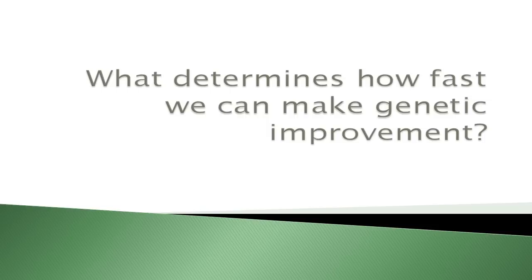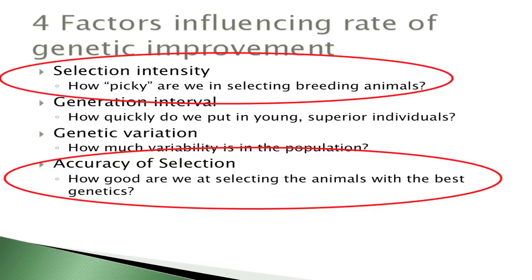To understand EPD, you have to understand where it fits in genetic improvement — how do I make my next generation better than what I currently have? What are the right selection decisions? There are four things that determine how fast we make genetic improvement. I'm taking the perspective where you pick a specific trait — for most of you, there's more than one trait that's important, but if you just pick one, let's say fiber diameter, standard deviation of fiber diameter, or fleece weight.